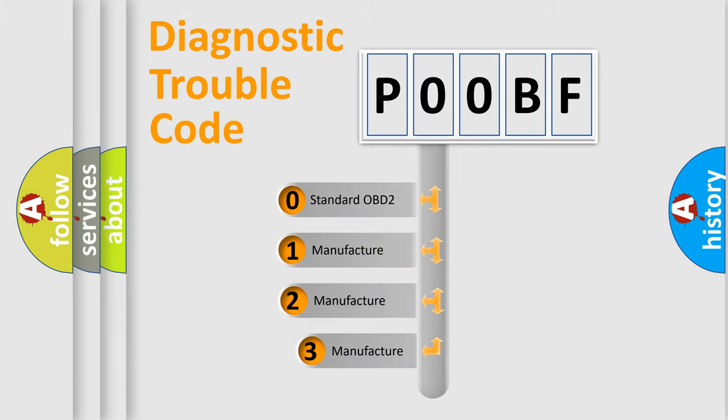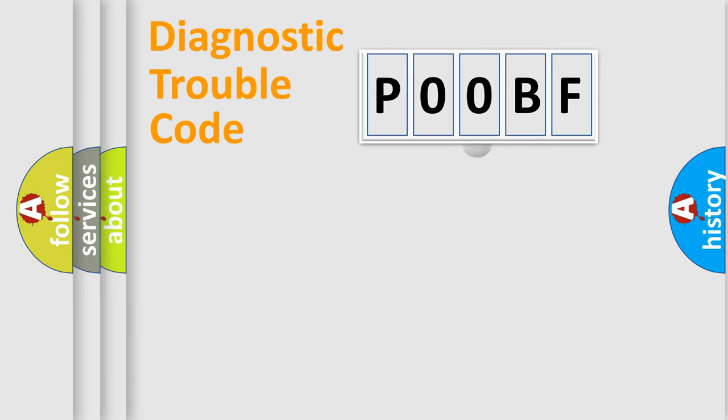If the second character is expressed as zero, it is a standardized error. In the case of numbers 1, 2, or 3, it is a manufacturer-specific expression of the car-specific error.